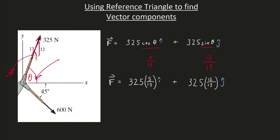Therefore, we can break down our force vector into x and y components without even explicitly knowing what our angle theta is. The thing that matters is we know the cosine of that angle and the sine of that angle. Since both of these angles are the same, we can figure out the cosine and sine of angle theta using this mini reference triangle.